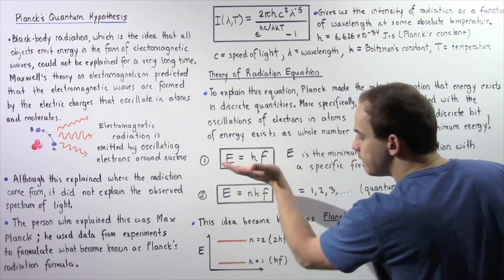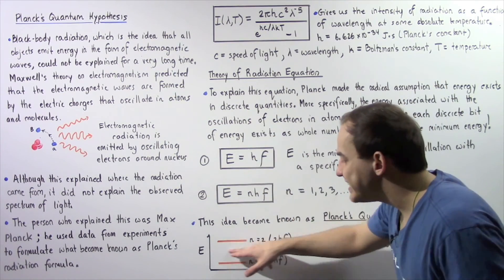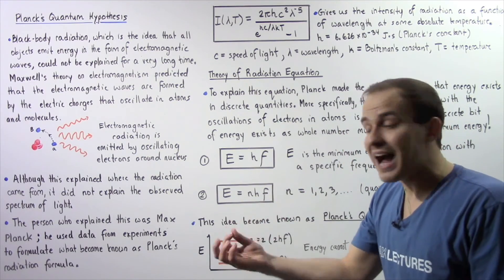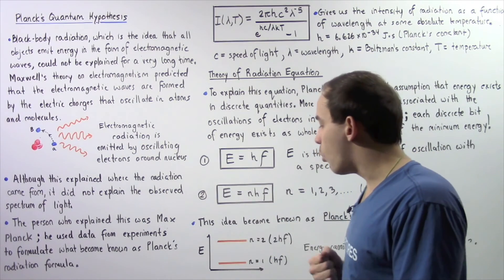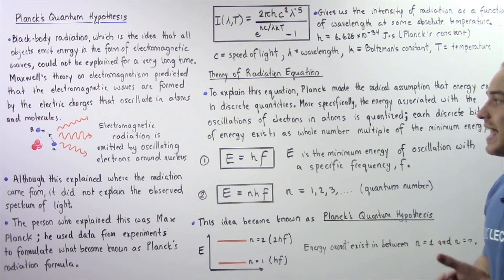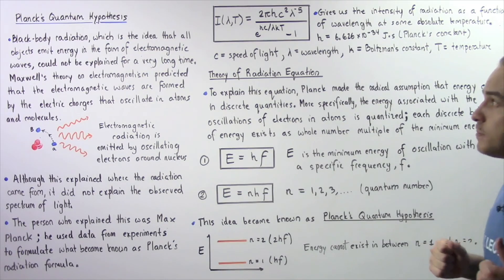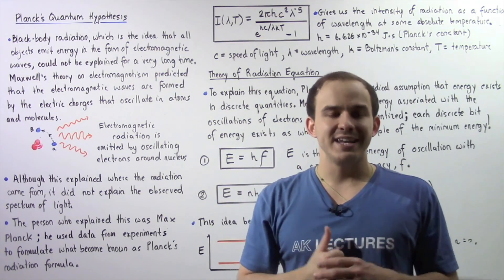For example, N equals three, four, five. Energy cannot be in between. For example, energy cannot exist where N is 1.5 or 1.6. So once again, this theory basically helped explain black body radiation.